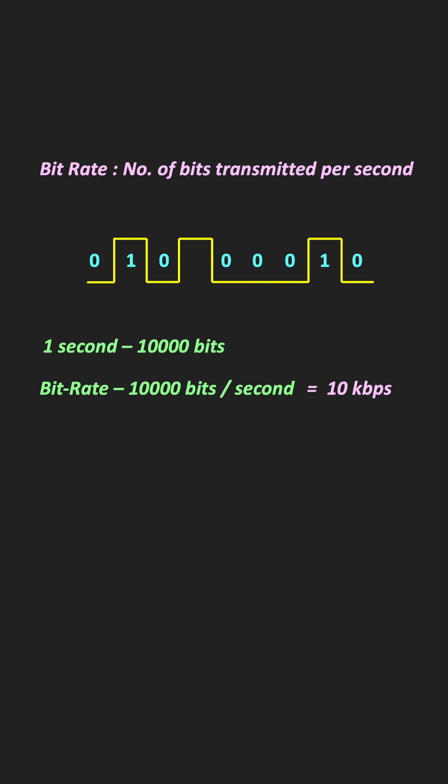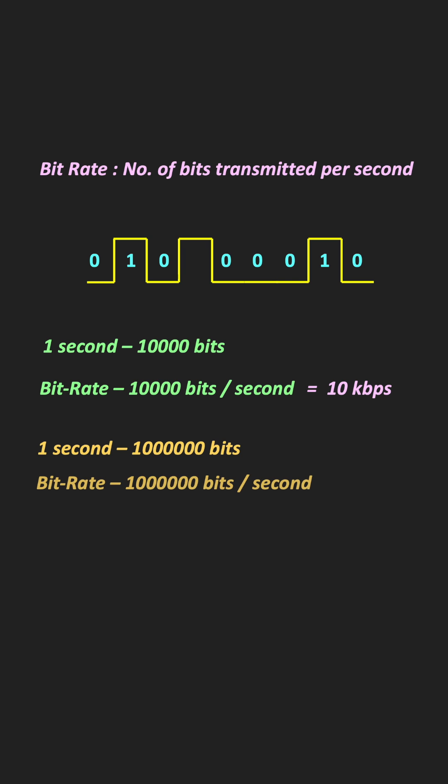Similarly, in one second, if 1 million bits are transmitted between two devices, it means that the data rate between the two devices is equal to 1 Mbps. So that is the bit rate.